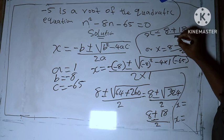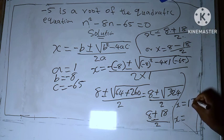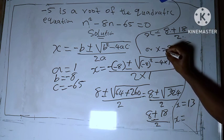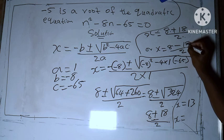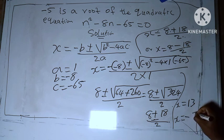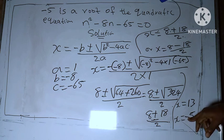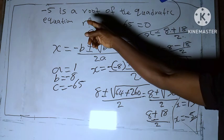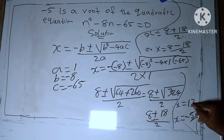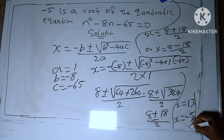So 8 plus 18 divided by 2 gives us 13. Then the second one is 8 minus 18 divided by 2 to give you -5. So you see that -5 is the first root, and the second one is 13. So these are the two roots.